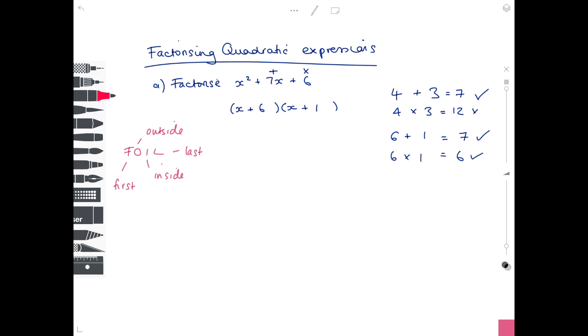According to that, when we expand our brackets we need to look at the first values first of all, so that's x². The outside terms is 1 times x, which is just x. The inside terms is 6 multiplied by x, which is 6x. And then our final or last term is 6 multiplied by 1, which is 6. Collect together your like terms, and you'll see that yes, your answer was correct.